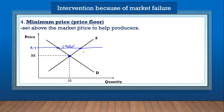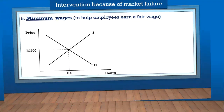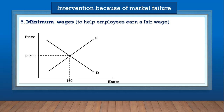The last example of government intervention is the minimum wage. Minimum wages are introduced to help employees earn a fair wage. Let's say market forces have determined that the wage should be 2500 for 160 hours of work, but the government decides this wage is too low — workers will not survive on these wages per month. So the government can set a minimum wage above the market wage.